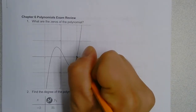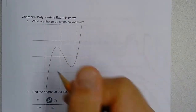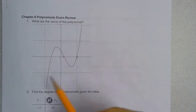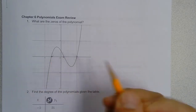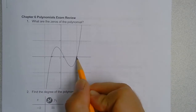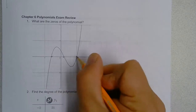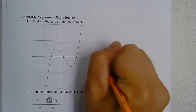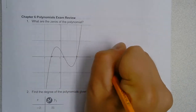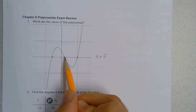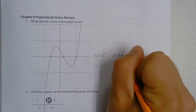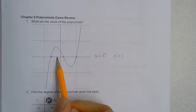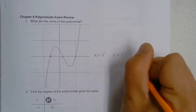This is a cubic because it crosses three times, and the zeros are in the spots located. Our first zero on the right is x equals 5. The next zero is x equals 1. And then over here, this is negative 1, negative 2, and negative 3.